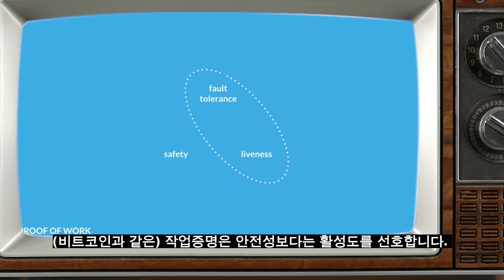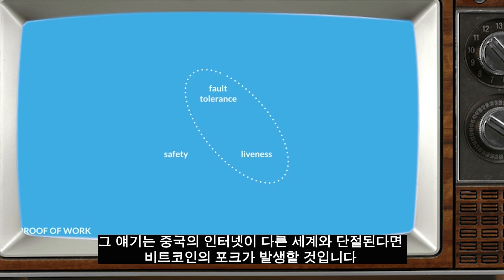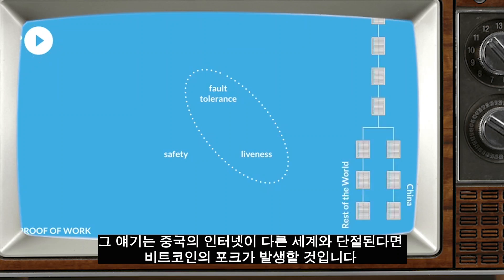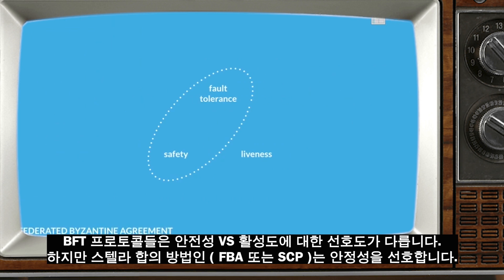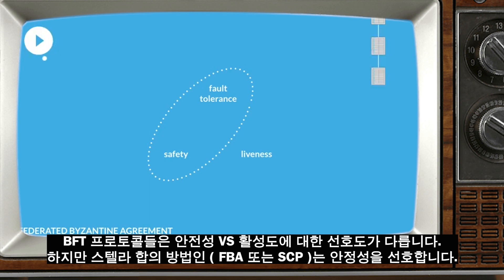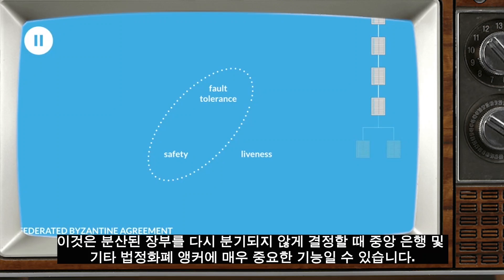Proof-of-work favors liveness over safety, meaning that if China's internet were cut off from the rest of the world, a fork in the Bitcoin blockchain would occur. Miners in China would keep building on one blockchain, and miners outside of China would fork and create their own ledger, causing potential double spends. BFT protocols vary in their preference for safety versus liveness, but the Stellar consensus protocol version of FBA favors safety. In the event of an accidental fork, it halts progress of the network until consensus can be reached. This is a crucial feature in the minds of central banks, banks, and other fiat anchors when deciding which distributed ledger tech to build on.